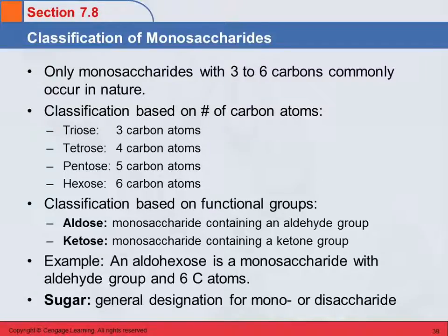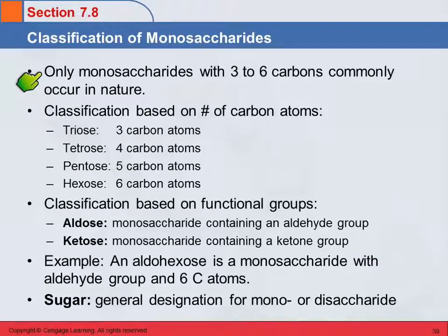We talked about classifying carbohydrates as monosaccharides, disaccharides, etc. Now we're going to look within the monosaccharide classification — we can classify those monosaccharides in a couple of different ways. Although we could draw structures for a lot of monosaccharides, it happens that only the monosaccharides with three to six carbons commonly occur in nature. Since we're studying the chemistry of biological organisms, we're only going to talk about the ones that are actually found there.